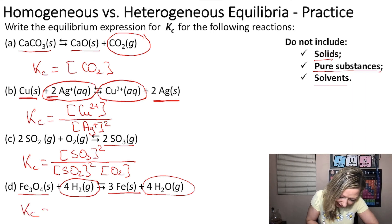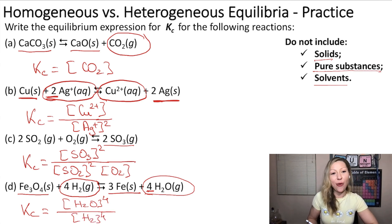So Kc, in this case, equals the concentration of H2O on the exponent of 4, divided by the concentration of H2 on the exponent of 4.